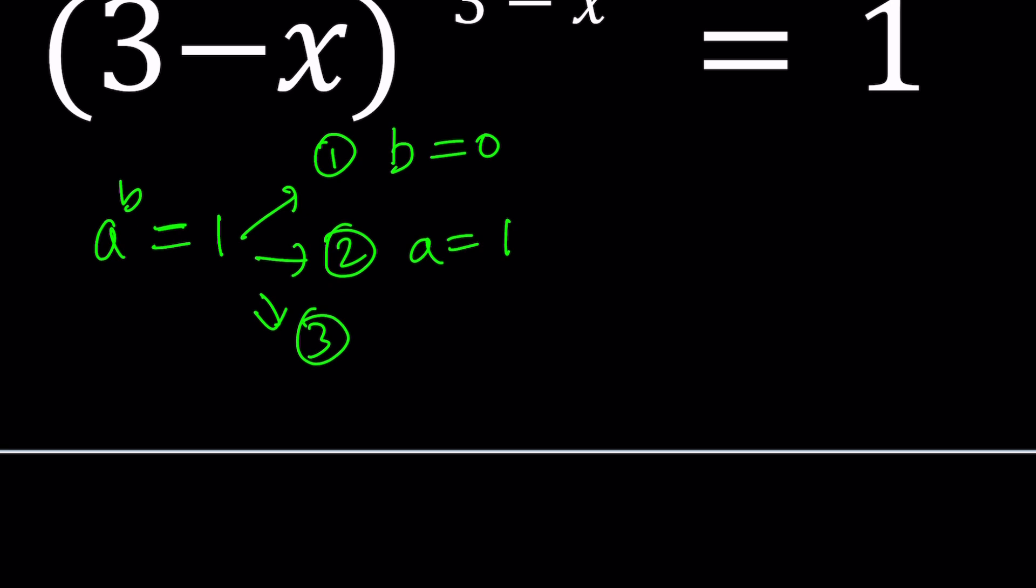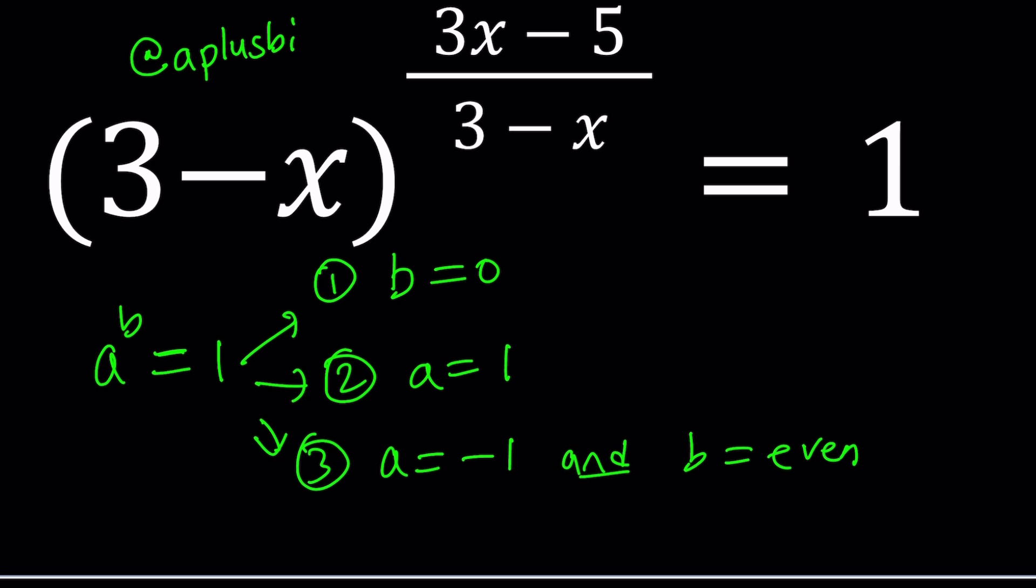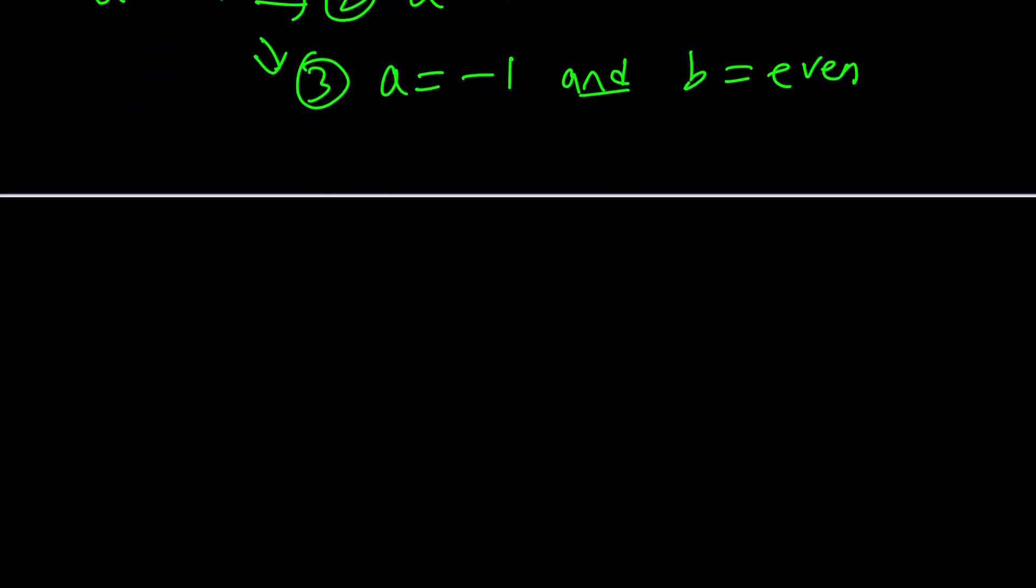The third case is a equals negative 1 and b is even. Both of those have to happen because if you raise negative 1 to an odd power, you get negative 1. If you raise negative 1 to an even power, you get positive 1. So to get positive 1, you need an even exponent. We're talking about the evenness of a rational fraction. And so we're going to go ahead and look into that. So we have those three cases. Let's go ahead and take a look at each one.